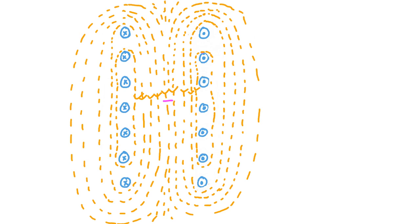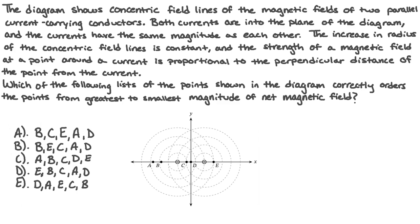Let's apply what we've learned about electromagnetic interactions between straight conductors to an example problem. The diagram shows concentric field lines of the magnetic fields of two parallel current-carrying conductors. Both currents are into the plane of the diagram and have the same magnitude. The increase in radius of the concentric field lines is constant, and the strength of the magnetic field at a point around a current is proportional to the perpendicular distance of the point from the current.